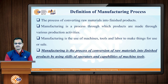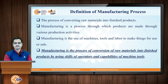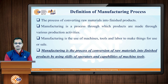Considering all these definitions and the four important aspects of manufacturing — material, men, machine, and capital (money) — the simplest definition is: manufacturing is the process of conversion of raw materials into semi-finished or finished products by using the skills and expertise of operators and the abilities and capabilities of machine tools.